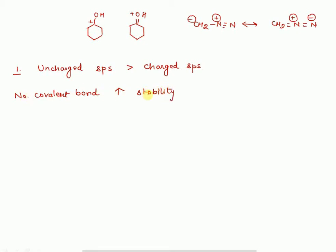On the basis of this rule you can decide stability of two structures — in this one there is one more covalent bond, so this one is more stable. First check the number of covalent bonds; if greater in any species, stability will be higher for that. If the number of covalent bonds are the same, then you have to check charge separation. When charge separation is low, stability is high.